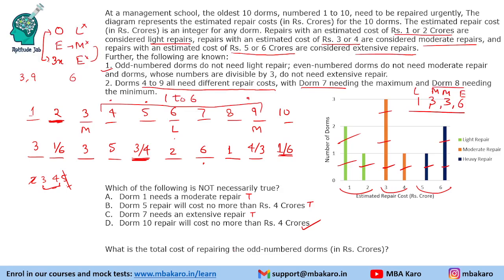The next question asks: what is the total cost of repairing the odd-numbered DOMs? The odd DOMs are 1, 3, 5, 7, 9. We have 3 + 3 = 6 from DOMs 1 and 3, and adding DOM 7's 6 crores gives 13. Including DOMs 5 and 9 gives a total of 19 crores.